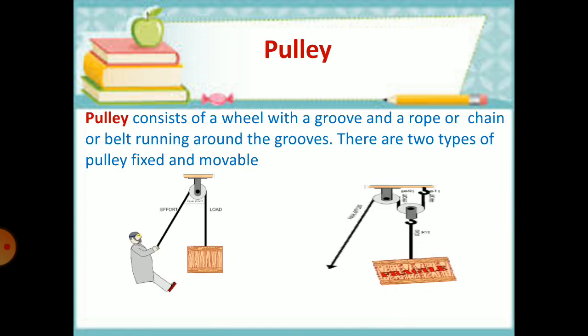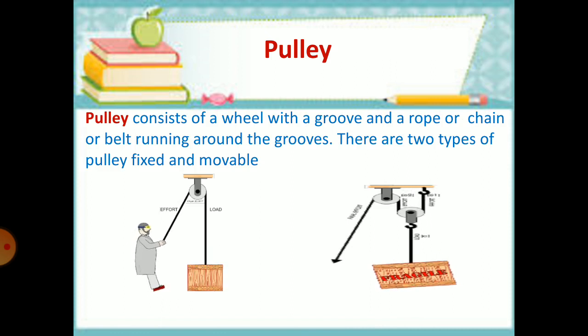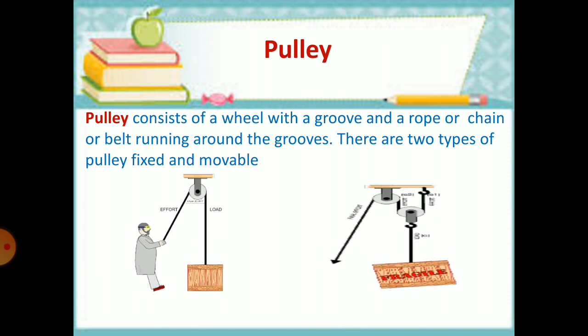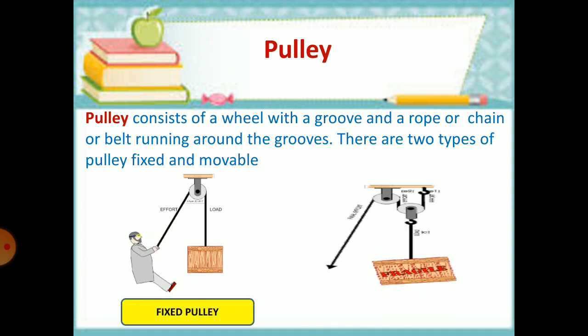Pulley consists of a wheel with a groove and a rope or chain or belt running around the grooves. There are two types of pulley: fixed pulley and movable pulley.